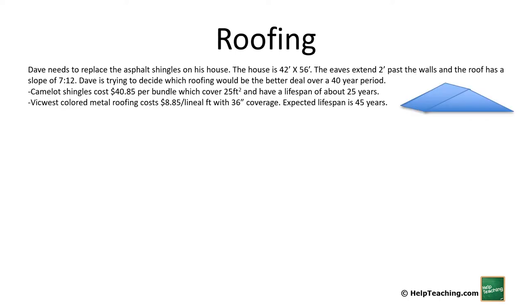So here's an example of roofing. Dave needs to replace the asphalt shingles on his house. The house is 42 by 56 feet. The eaves extend 2 feet past the walls and the roof has a slope of 7/12. Dave is trying to decide which roofing would be a better deal over a 40-year period. His first option is the Camelot shingles which cost $40.85 per bundle. Each bundle covers 45 square feet and has a lifespan of 25 years. He's also looking at Vic West Colored Metal Roofing which costs $8.85 per lineal foot with 36 inch coverage. This means each sheet is 36 inches wide and it's $8.85 for every foot long of that sheet you buy. Expected lifespan is 45 years.